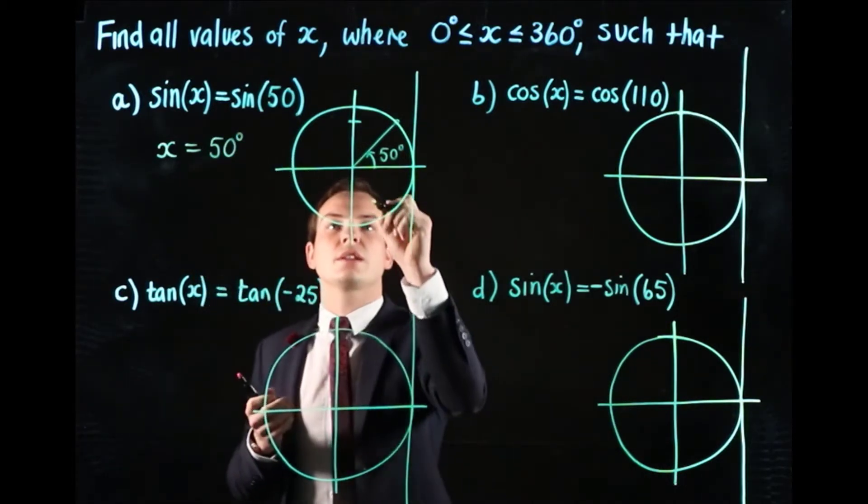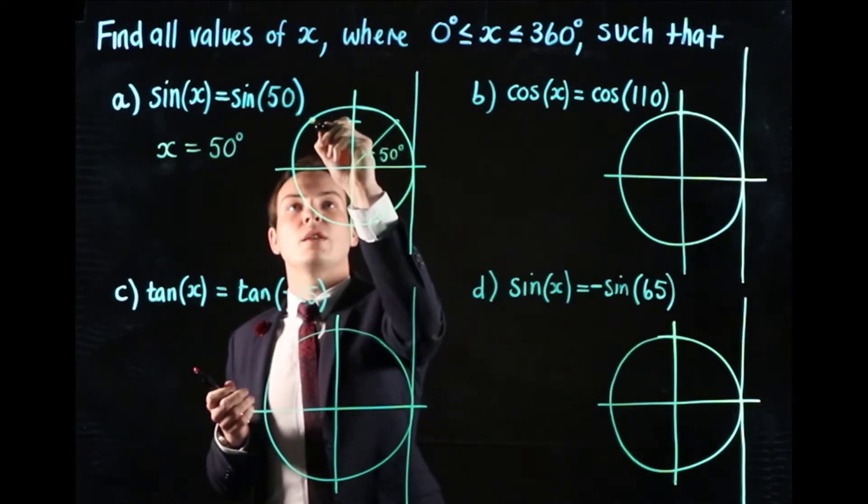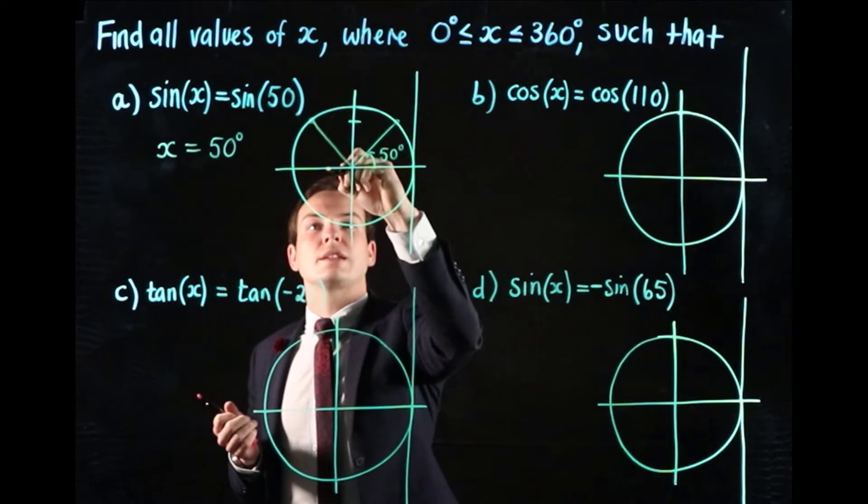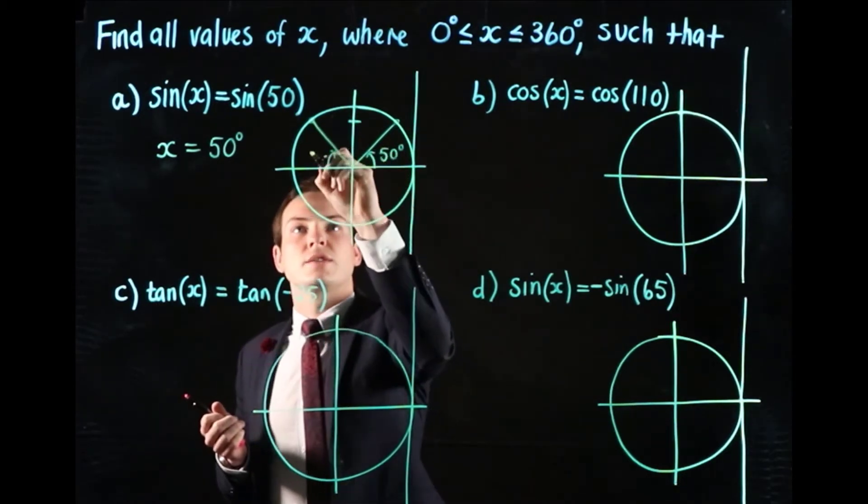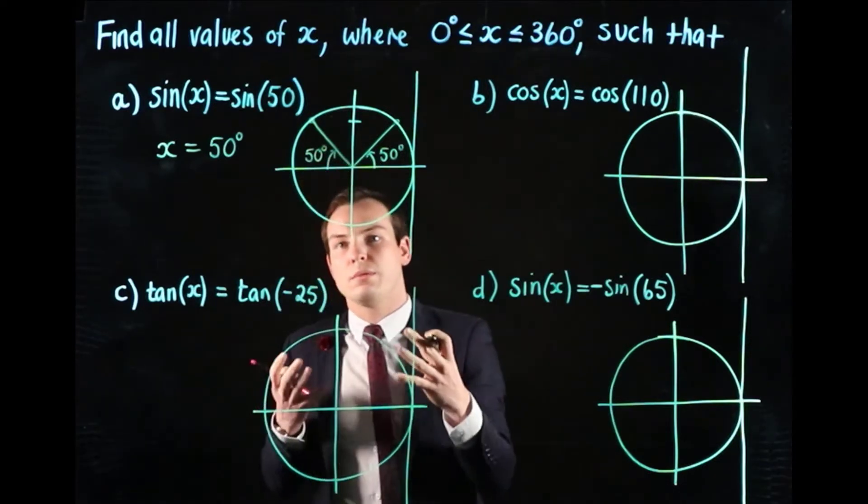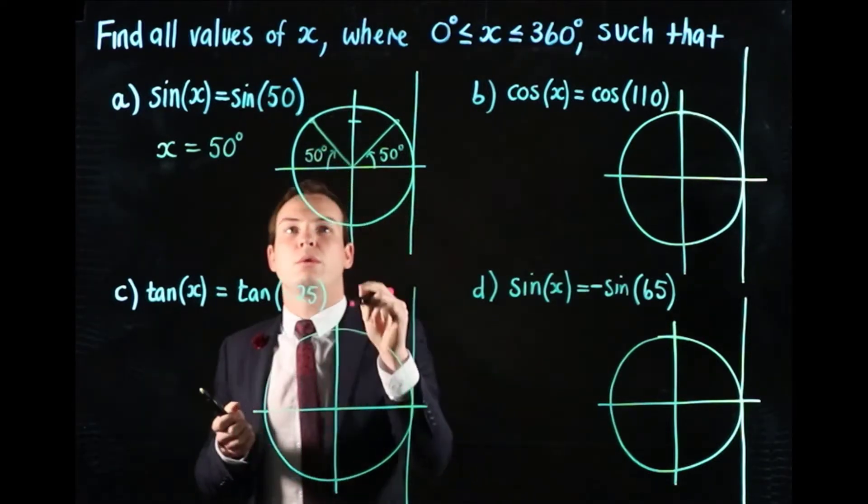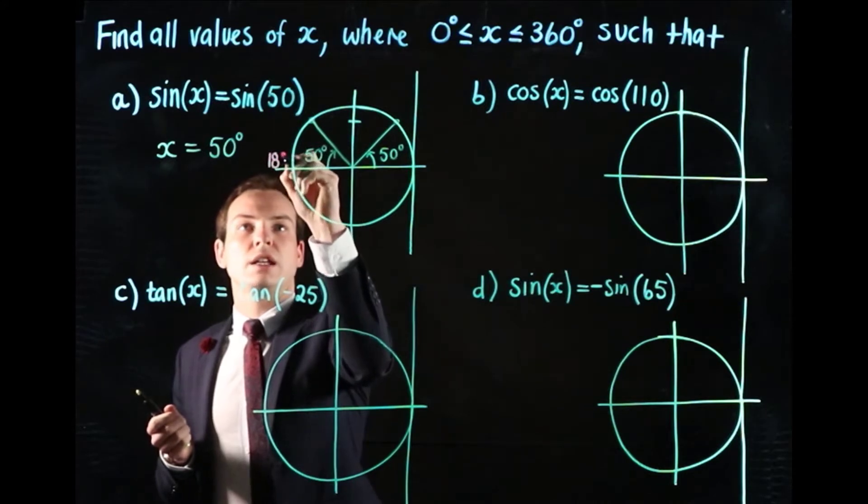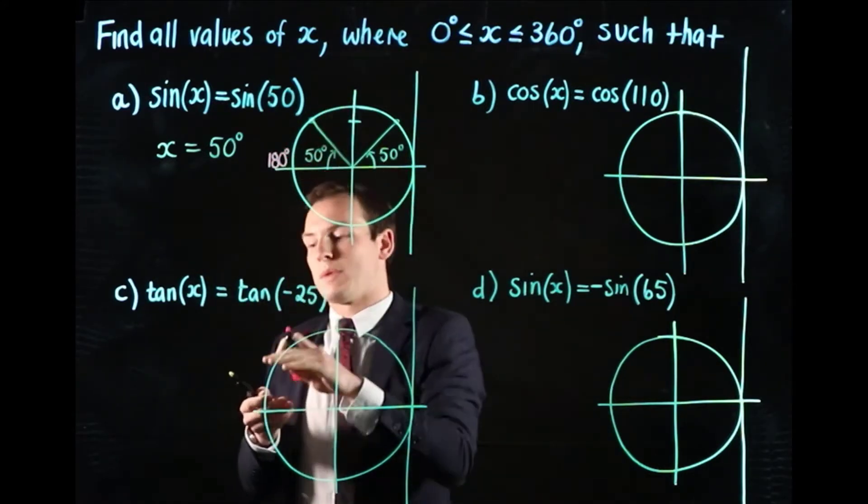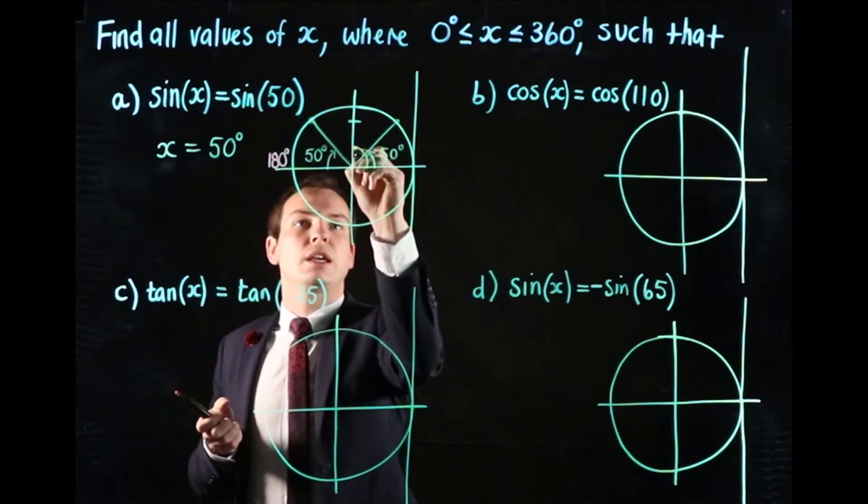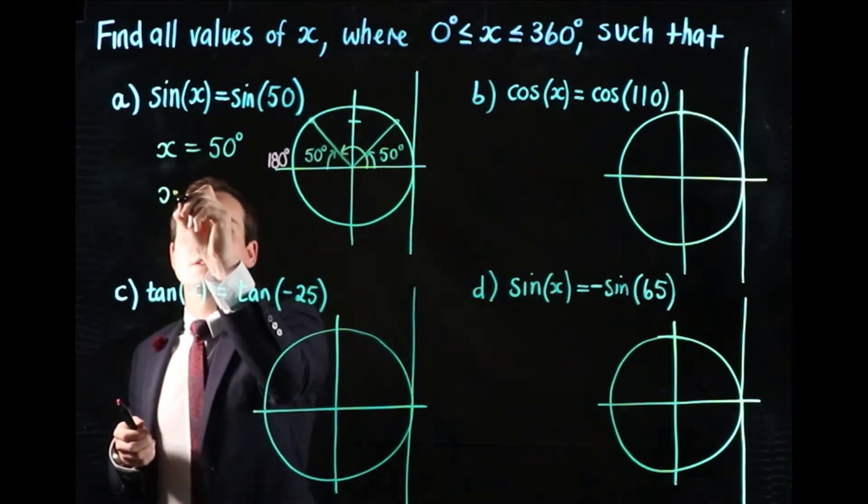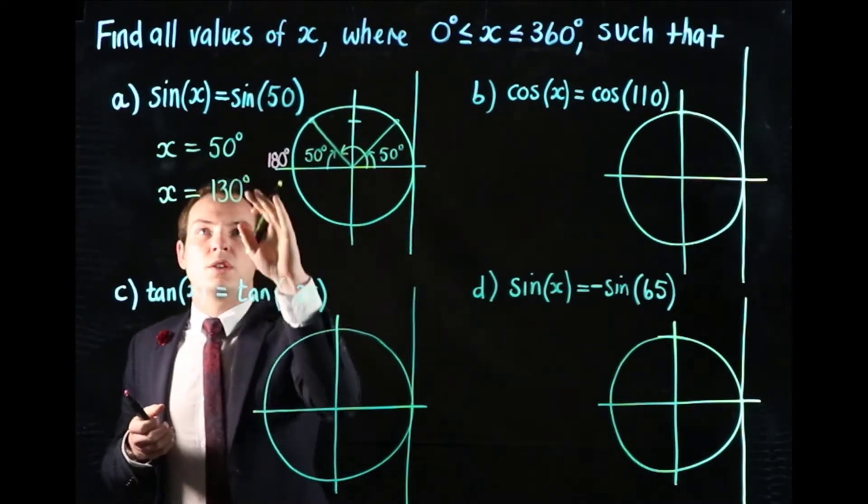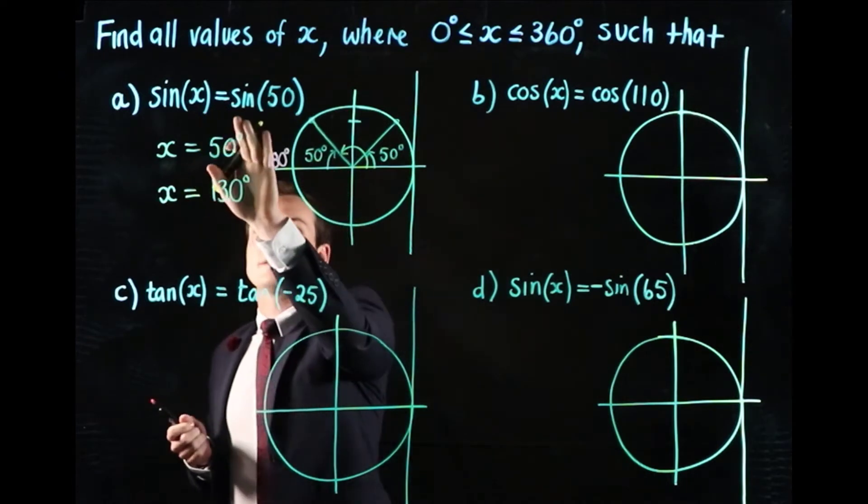The second one is actually over here. We want to get to this point so that the y-value there is the same as the y-value here. To do that, we need to go 50 degrees back from 180. The really important thing with the symmetry properties is we're always going backwards or forwards from the horizontal line. This here is 180 degrees, so we go 50 degrees back from that. The second angle is 130 degrees. So x equals 130. Those are all values of x such that sin(x) equals sin(50).